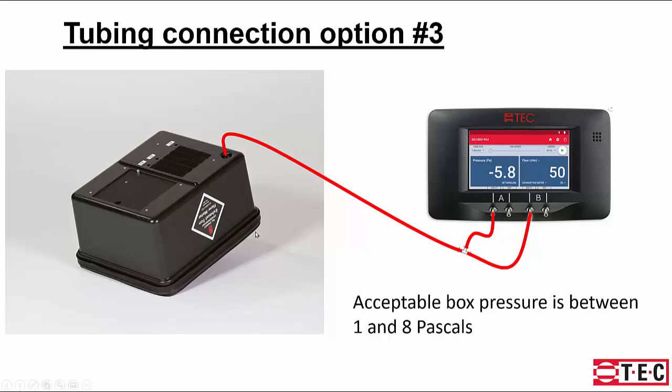The third option is the one I like the best. I like the idea of using a T connection and connecting to both channel A and B. The advantage is that the acceptable box pressure is between 1 and 8, so you'll be able to see right away that you're within the range you need to be, and it'll display flow at the same time.